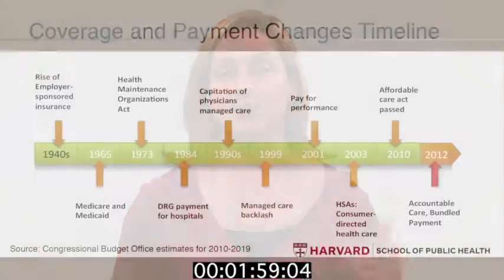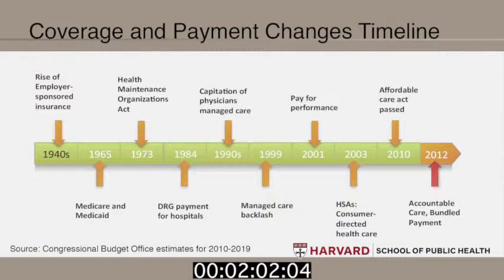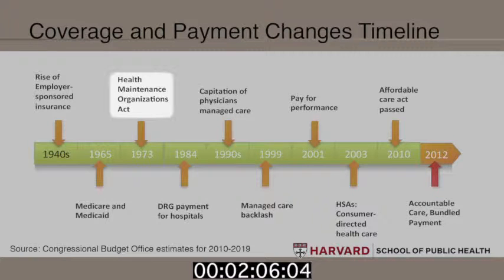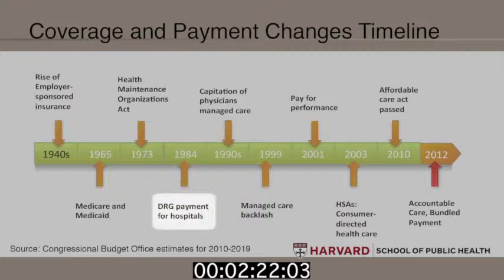As expanded coverage really took place in the US and many more groups of people were able to access health insurance, the question of cost control became more and more salient. A number of reforms went into effect in the 70s and 1980s that really addressed this. Health maintenance organizations were an early form of managed care that tried to use some tools to increase the value of how health care dollars were deployed, while putting some brakes on growing costs. Medicare also faced challenges in hospital payment, leading to a big hospital payment reform — the DRG system — in the 1980s.